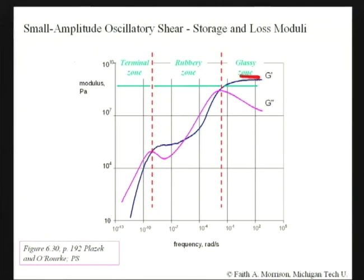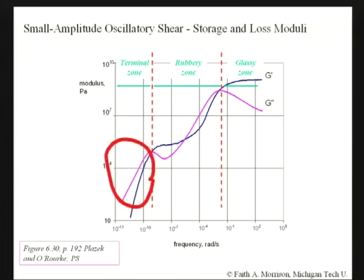In temperature terms, going from glassy to rubbery to liquid behavior corresponds to the glass transition temperature. This drop in G prime is like a glass transition loosening up, only it's happening in frequency instead of temperature. As you probe the material with lower and lower frequencies, it's as if you're probing at higher and higher temperatures. The terminal zone is when the whole polymer loosens up and acts like a liquid. These slopes of 2 and 1 down in the terminal zone are perfectly explicable through linear viscoelastic theory.